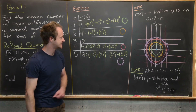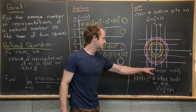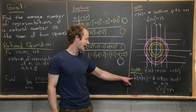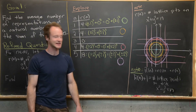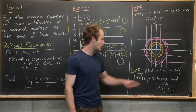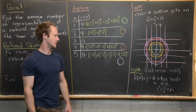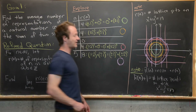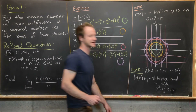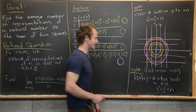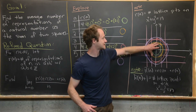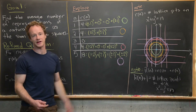An important observation: if we let capital R(n) = r(1) + r(2) + ... + r(n) — the numerator in our limit — then R(n) + 1 is the number of lattice points in the disk x² + y² ≤ n. We add one because none of the r(k) terms include the origin. So R(n) + 1 gives all lattice points on those circles plus the origin, which accounts for every lattice point inside the disk.